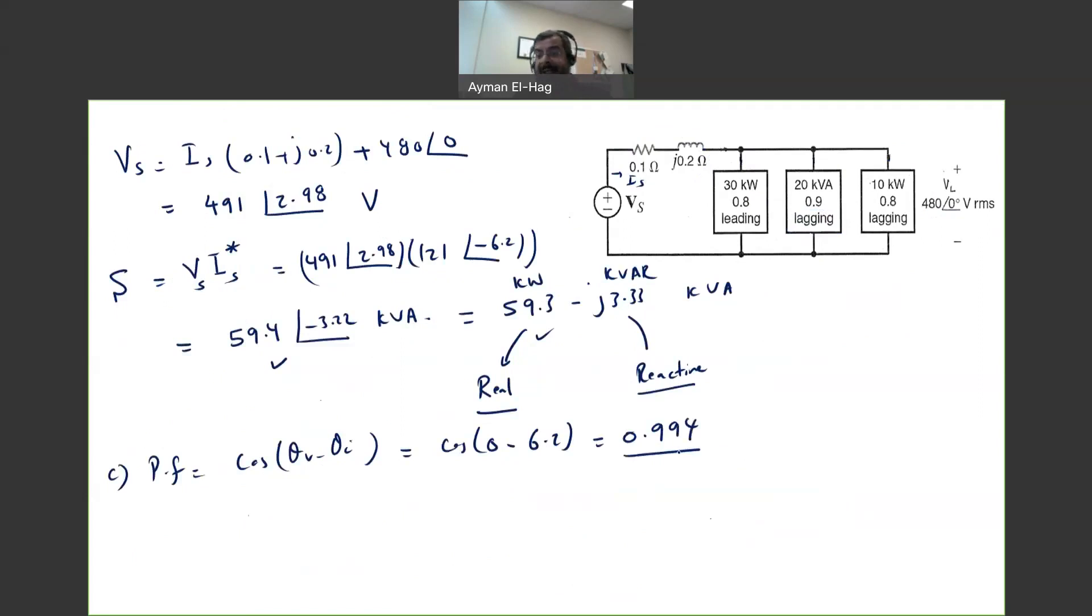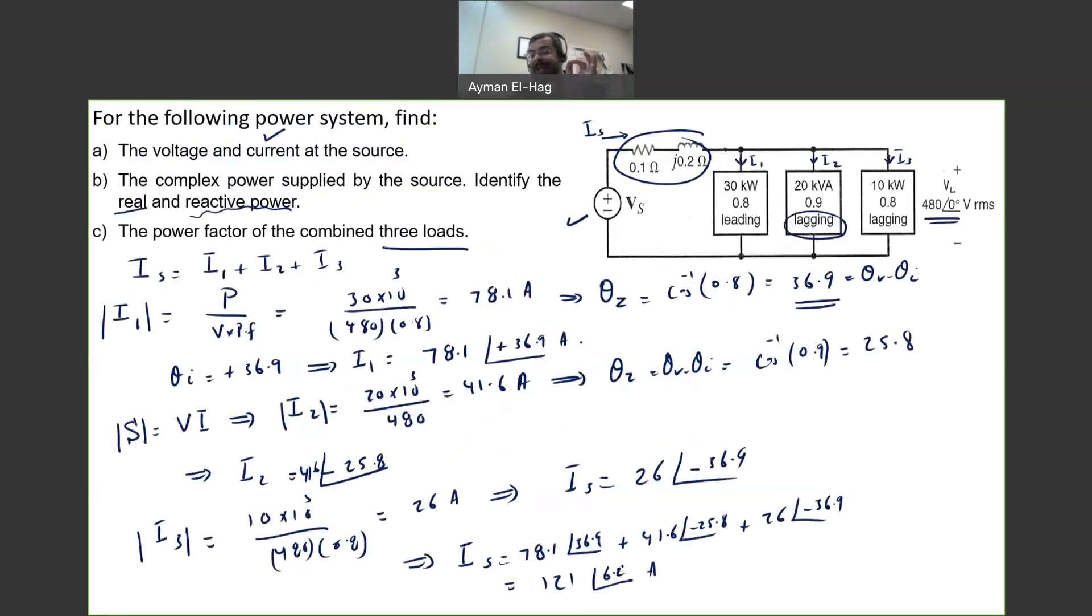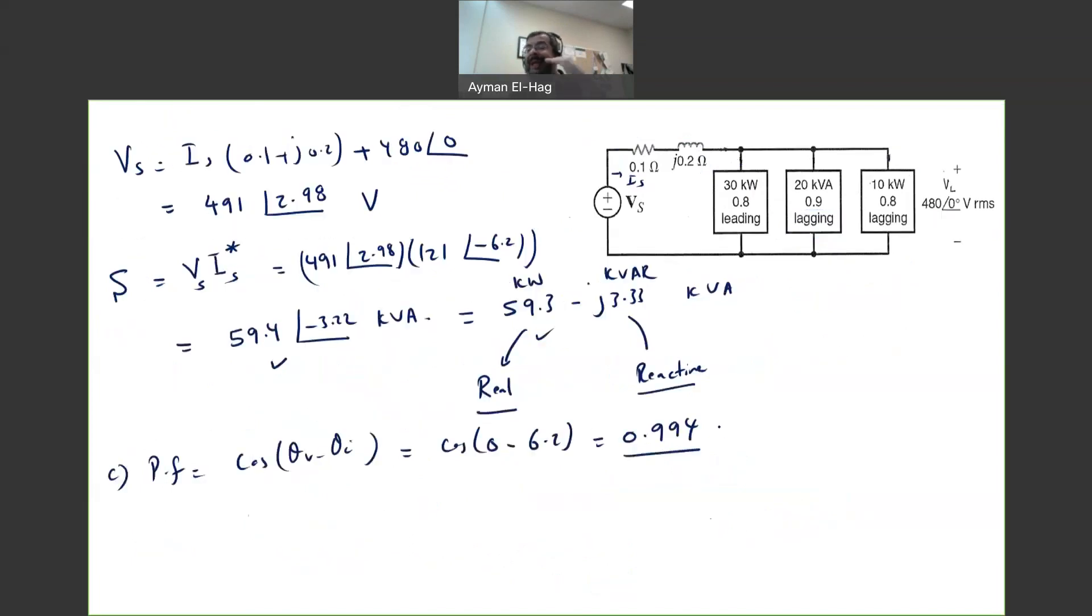Is this the answer? No, this is not the complete answer. Now, we have to specify if it is lagging or leading. Now, if you go back here, the current angle is plus 6.2. The voltage angle is zero. So the current actually leads the voltage, and the power factor is referring to the current, not to the voltage. So this has to be leading. So with this, this question actually summarizes all the needed information when it comes to the single phase power calculation.